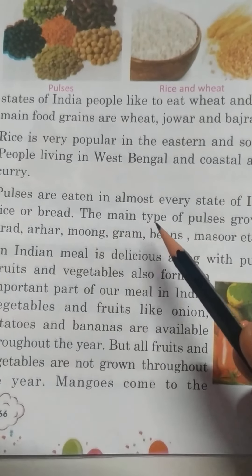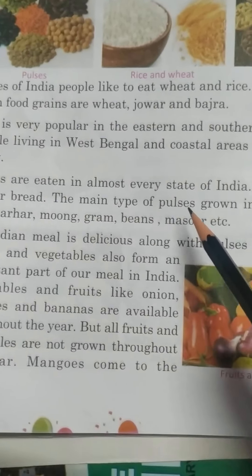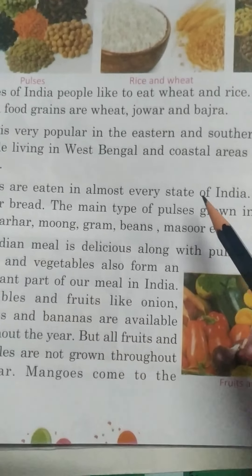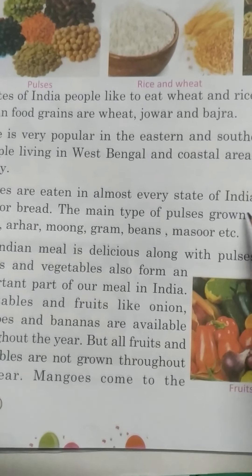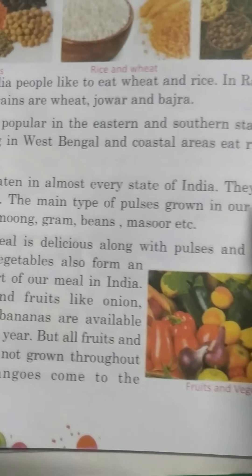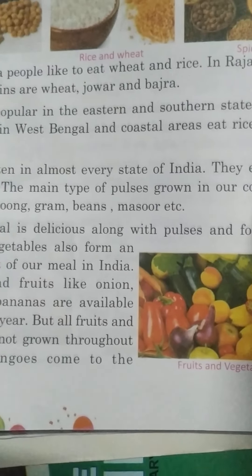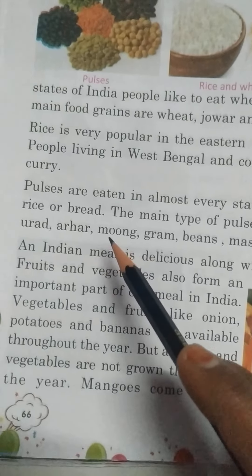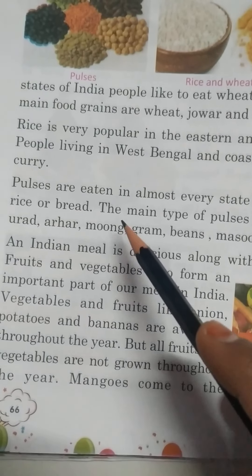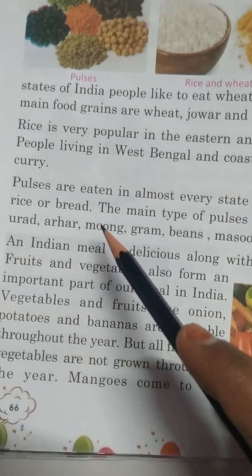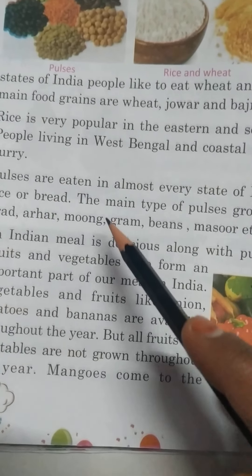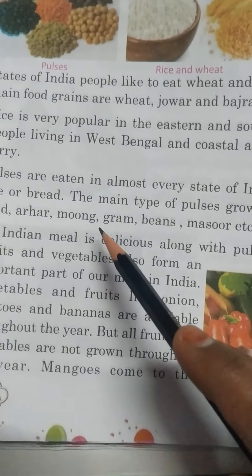Pulses are eaten in almost every state of India. India کے اکثر states میں دال کھائی جاتی ہے. They eat it with rice or bread — یعنی چاول سے یا چپاتی سے کھائی جاتی ہے.